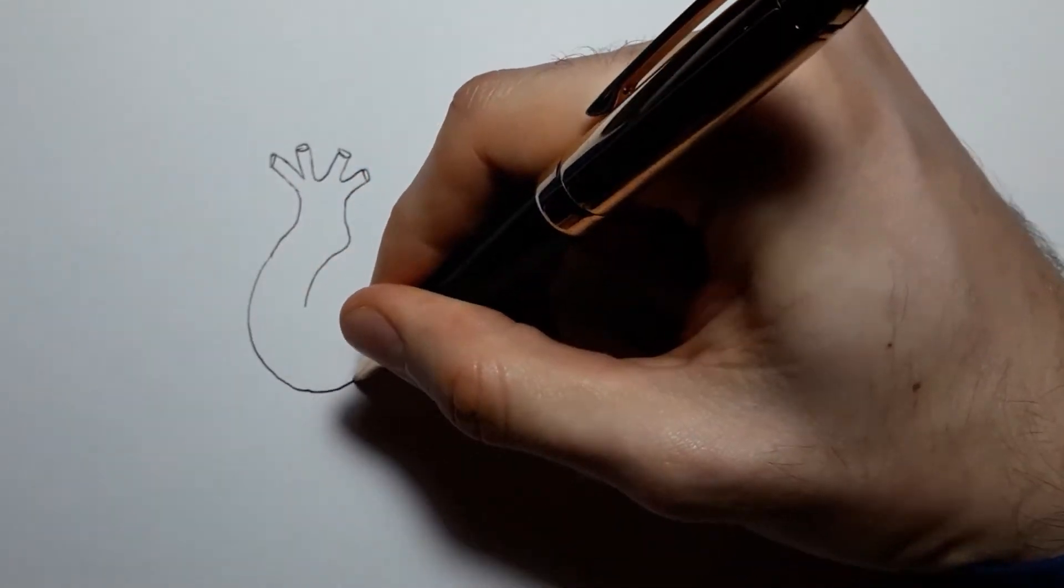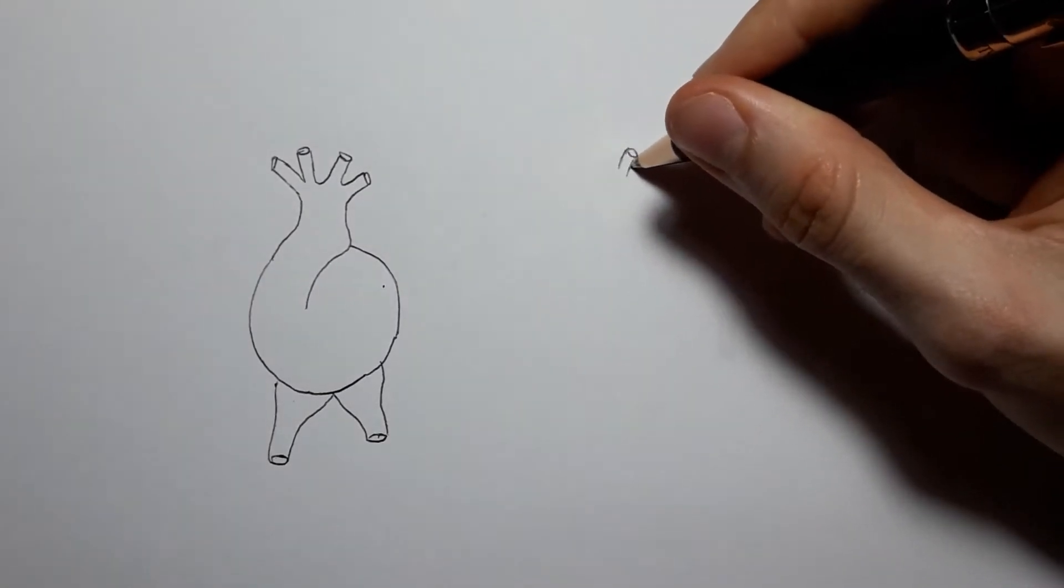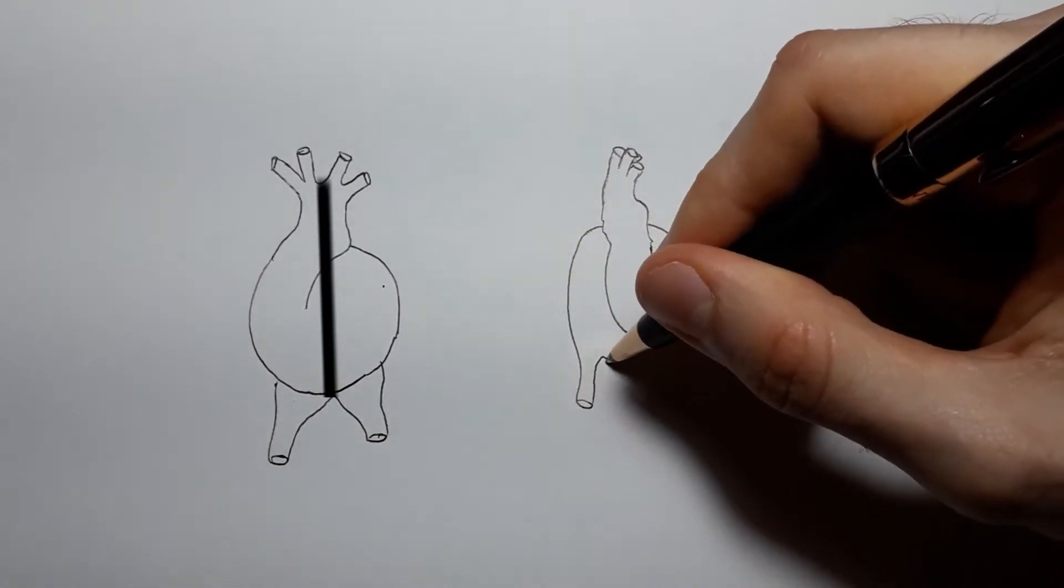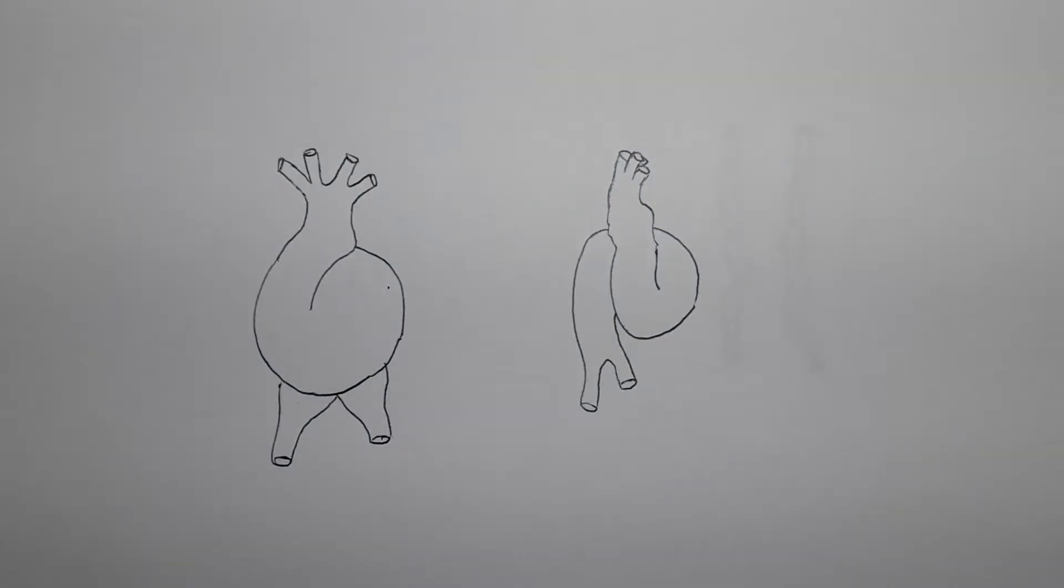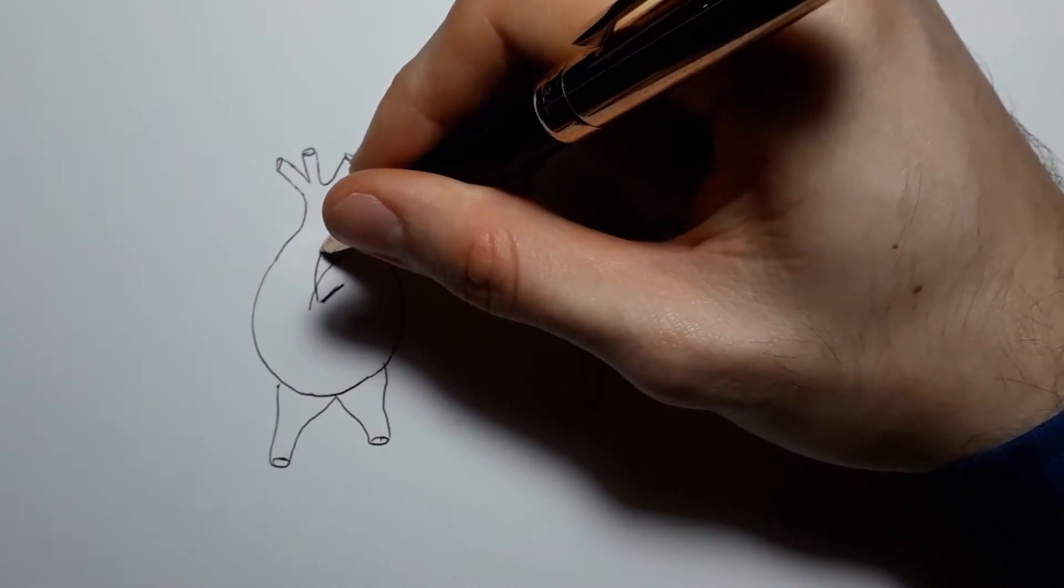However, for the primitive heart to form the two circulations we have as adults, the pulmonary circulation and the systemic circulation, it needs to be divided between right and left heart, which for the truncus arteriosus means being septated into the aorta and the pulmonary trunk.